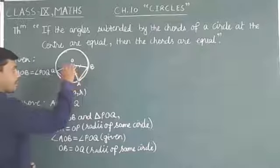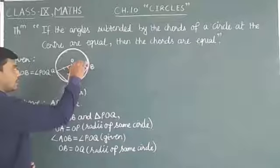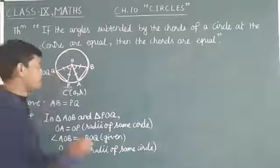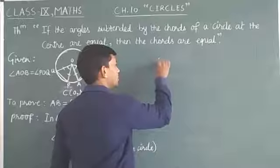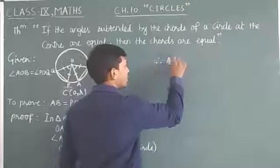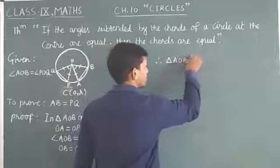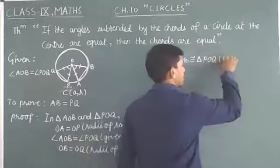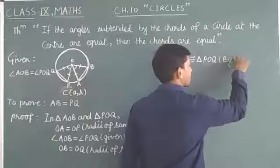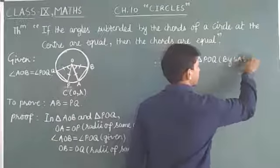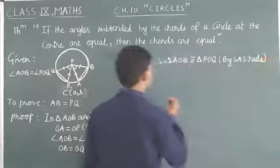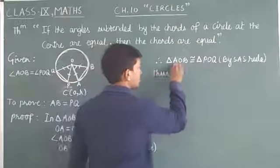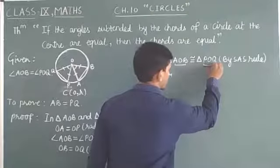Therefore these two triangles are congruent to each other. Triangle AOB is congruent to triangle POQ by SAS. Thus by CPCT, AB equals PQ.